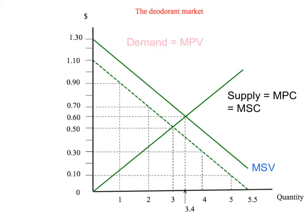What about for a positive externality? In our diagram, the supply curve is both the marginal private cost curve and the marginal social cost curve because we've put the positive externality on the demand side. We have our downward sloping demand curve — the marginal private value curve — but the marginal social value curve lies above the demand curve because it includes the 20 cents extra marginal value created by an extra squirt of deodorant — the positive externality. That gives us our market outcome where demand and supply intersect at three squirts per day, and the socially optimal outcome at 3.4 squirts per day where marginal social value equals marginal social cost.